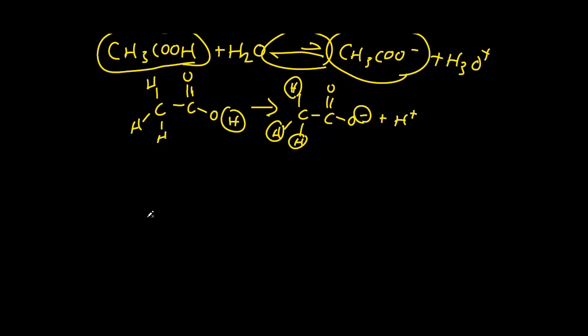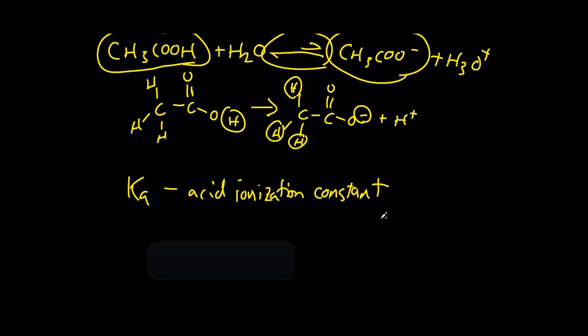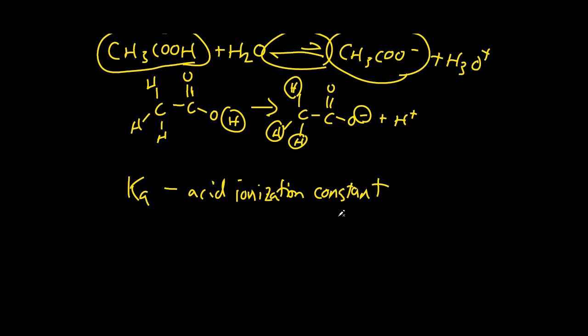And that brings into something called Ka, acid ionization constant, also called the acid disassociation constant. And basically it describes the extent to how much that acid is going to donate the proton.